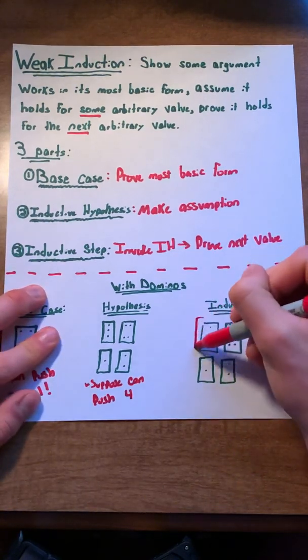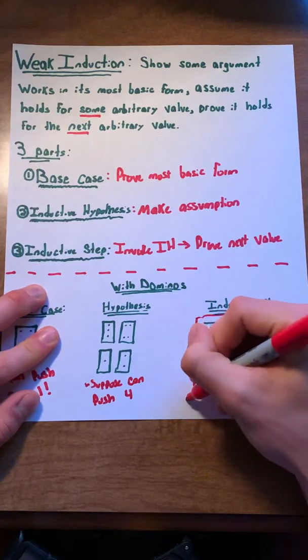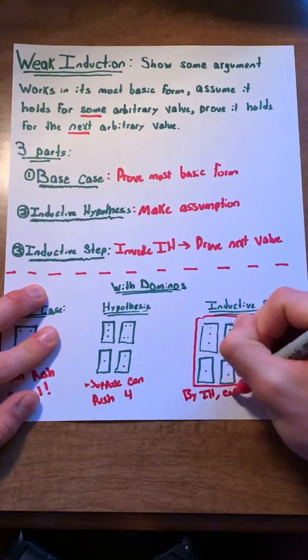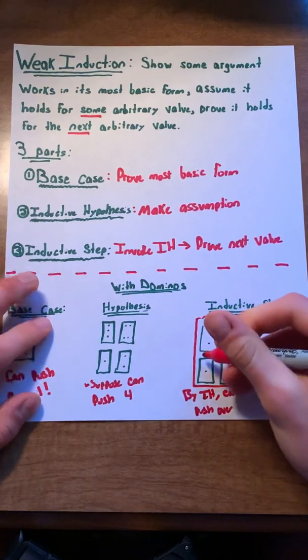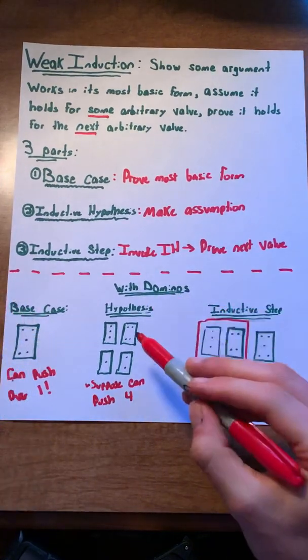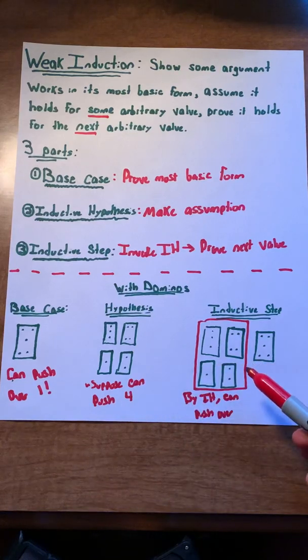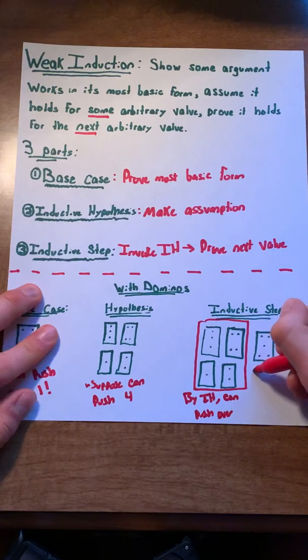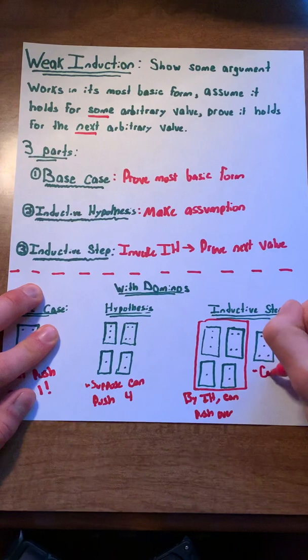We would then want to invoke our inductive hypothesis in the inductive step. We would take these four dominoes and say, by our inductive hypothesis, we can push those over. That works because in our hypothesis, we show that we can push over four dominoes. So in this step, we should be able to push over four dominoes as well. We would use that to prove that as a whole, we could push over five dominoes.